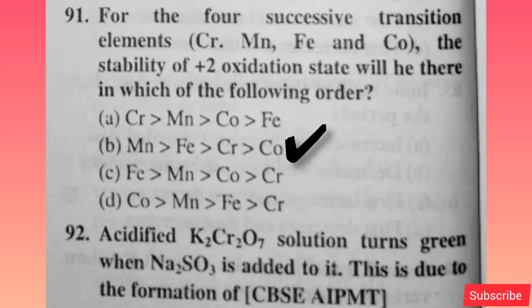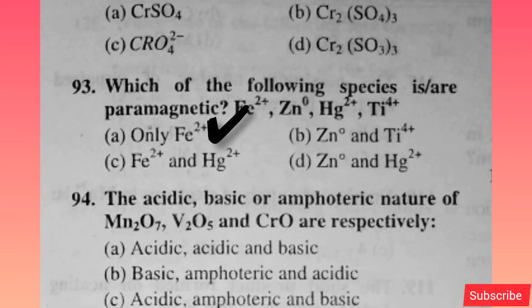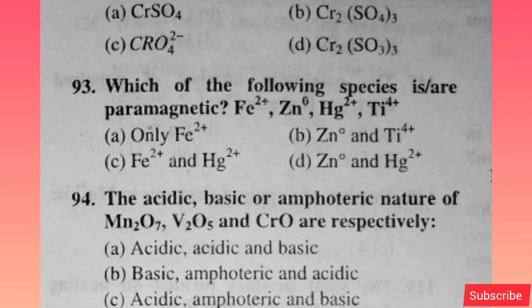Option B is correct. Acidified K2Cr2O7 solution turns green when Na2SO3 is added to it. This is due to the formation of — option B is correct. Which of the following species are paramagnetic? Option A is correct. The acidic, basic, and amphoteric nature of Mn2O7, V2O5, and CrO are respectively — option C is correct.